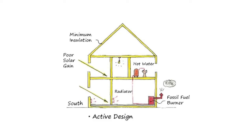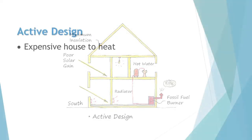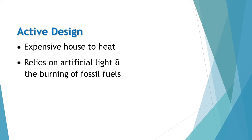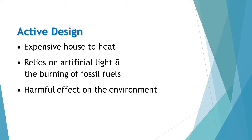This burner is also used to heat the water for the house. Lastly, the house relies on artificial lighting, and hence the light bulb is in the very centre of the sketch. Taking all this into account, this will not be an efficient house. It would be an expensive house to heat, relying on artificial light and the burning of fossil fuels, which will ultimately have a harmful effect on the environment.